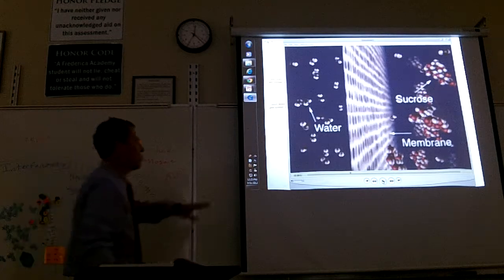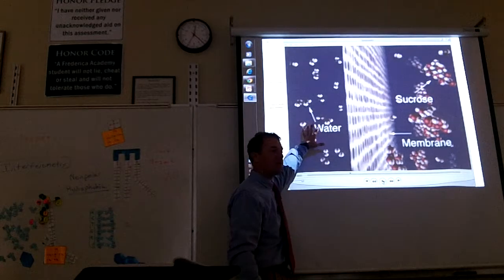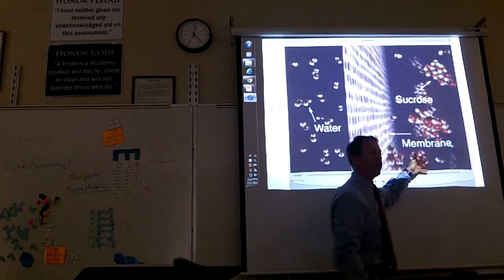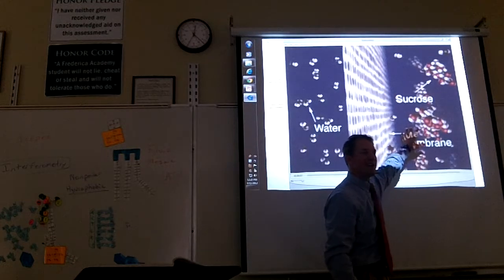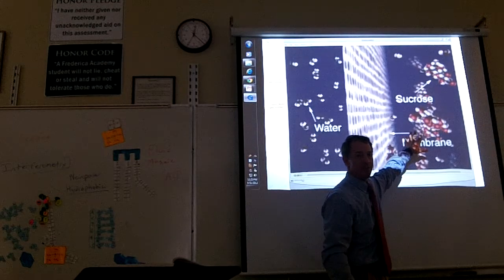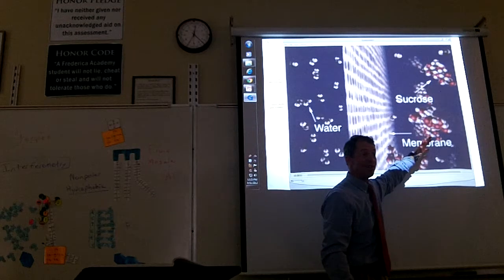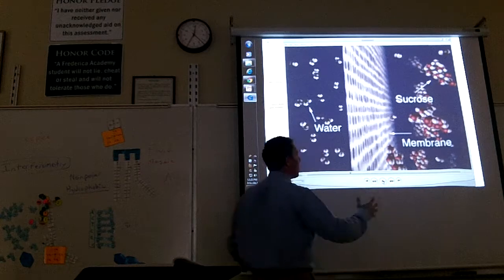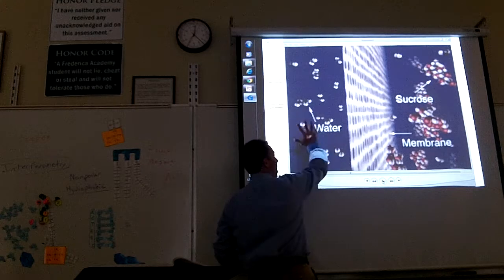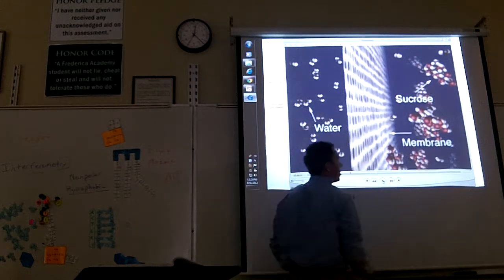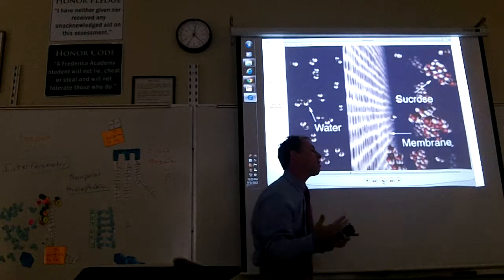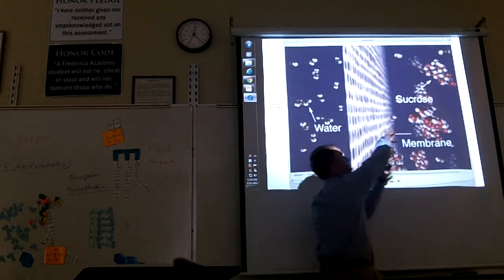There's pure water on one side — 100% water — and sugar water on the other side, so it's less than 100% water, maybe 90%. What's water going to do? Diffuse. Water wants to move from high concentration to low concentration, so there is a concentration gradient moving toward the sucrose side — the water will spread and move over there.